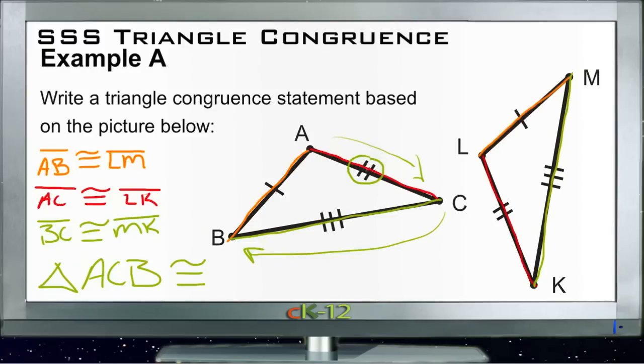We need to start with the side that uses the two hash marks, so we're going to start with L and go to K, then from K to M, and then from M to L. So triangle ABC is congruent with triangle LKM.